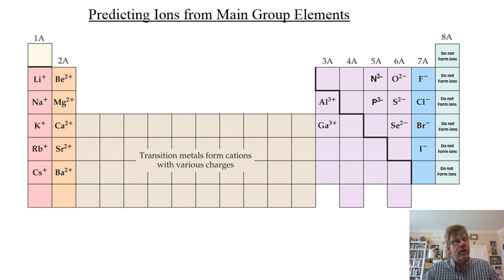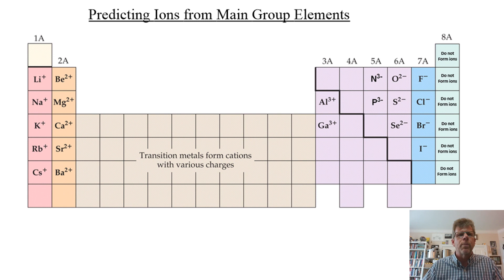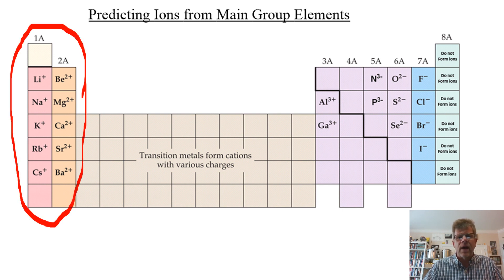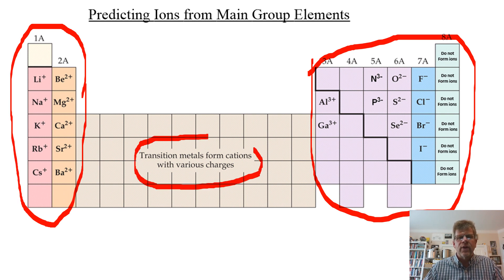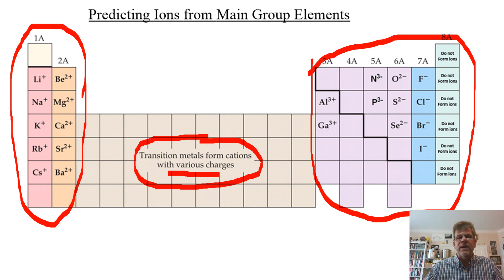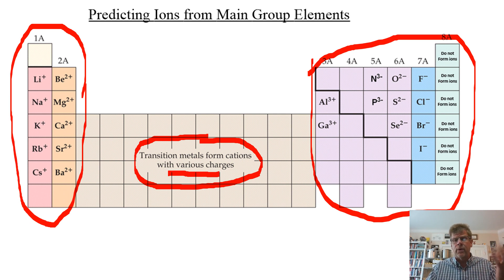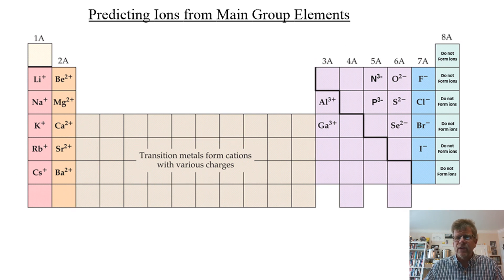Now let's look at another pattern in the periodic table — predicting ions from main group elements, specifically the s-block and the p-block. Our model works with s-block and p-block elements but not transition elements. Transition elements form cations because they lose electrons in chemical reactions — they are metals with various charges. The model we're using in this course does not predict the charges on transition metals; it only works with the s-block and the p-block.